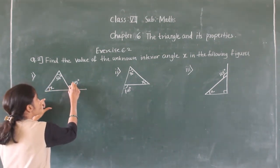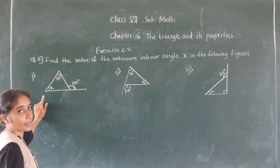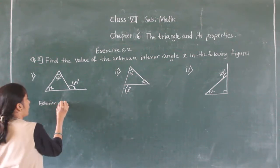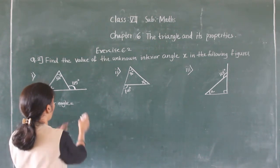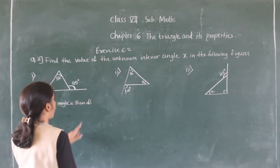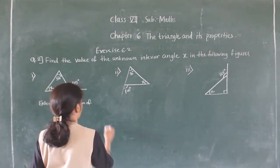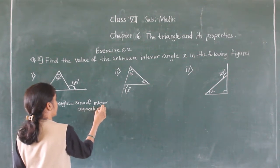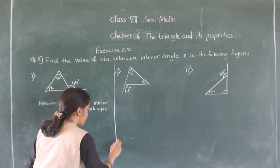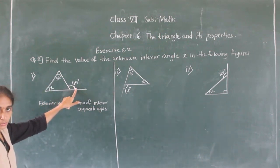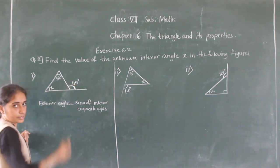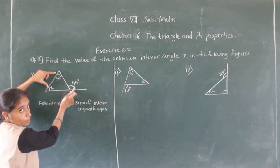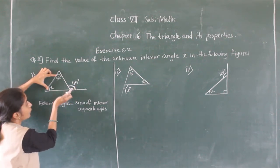Now, observe that this angle is an exterior angle, so we have to use the exterior angle property. The exterior angle is equal to the sum of the interior opposite angles. This angle here is the exterior angle, and it is equal to the sum of the interior opposite angles.